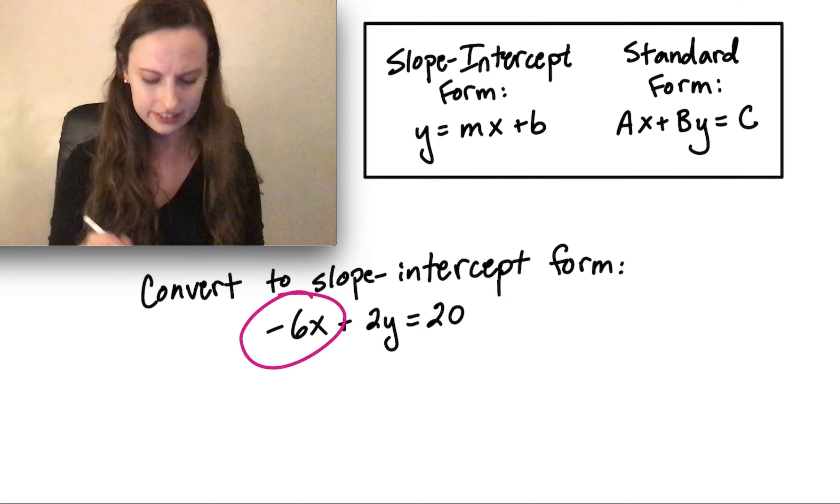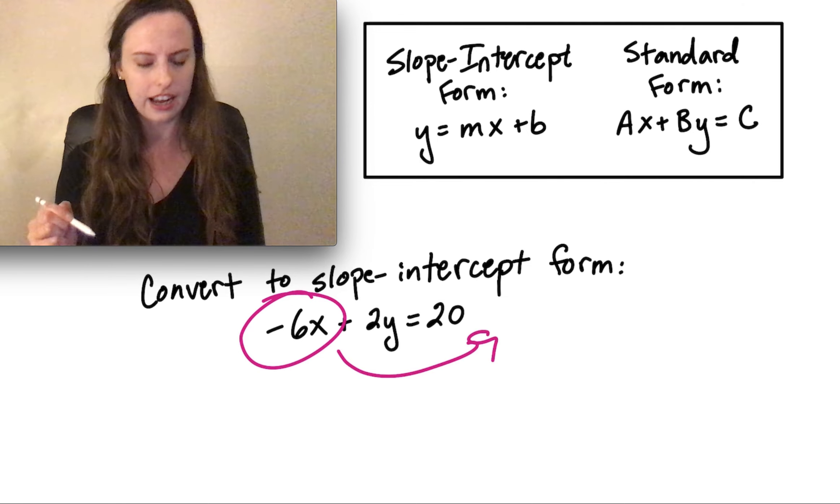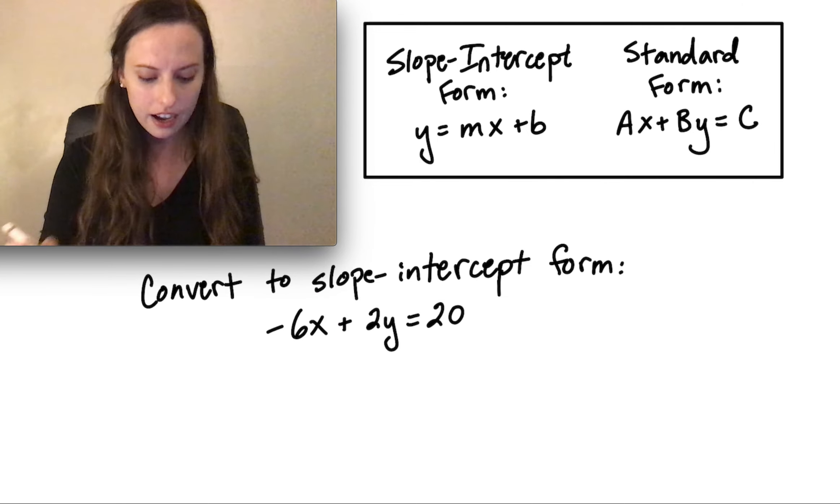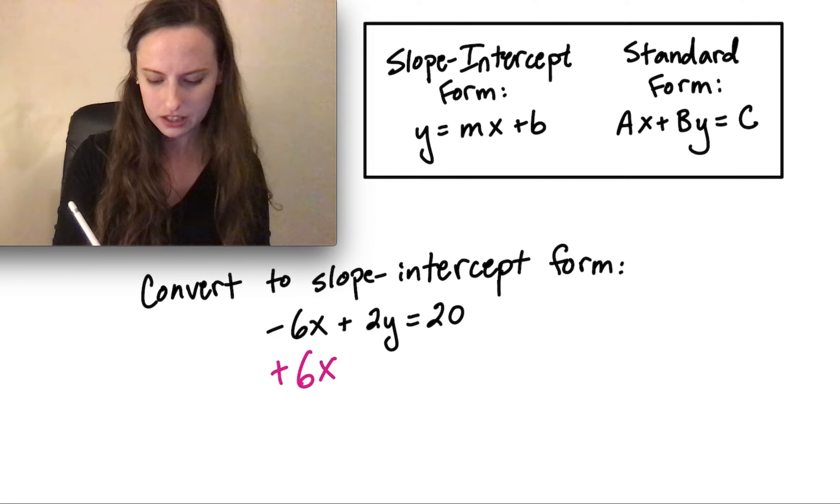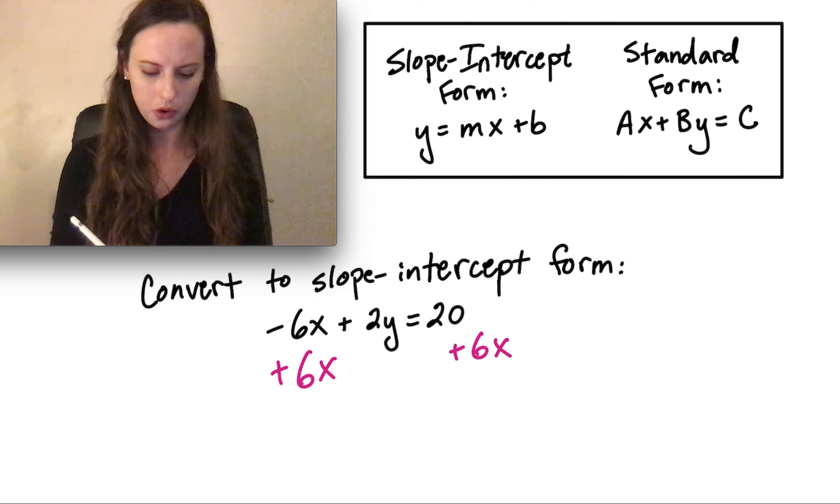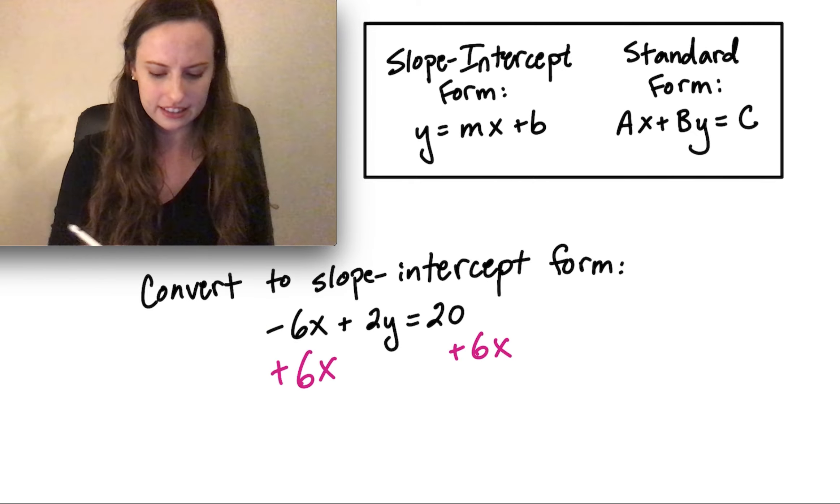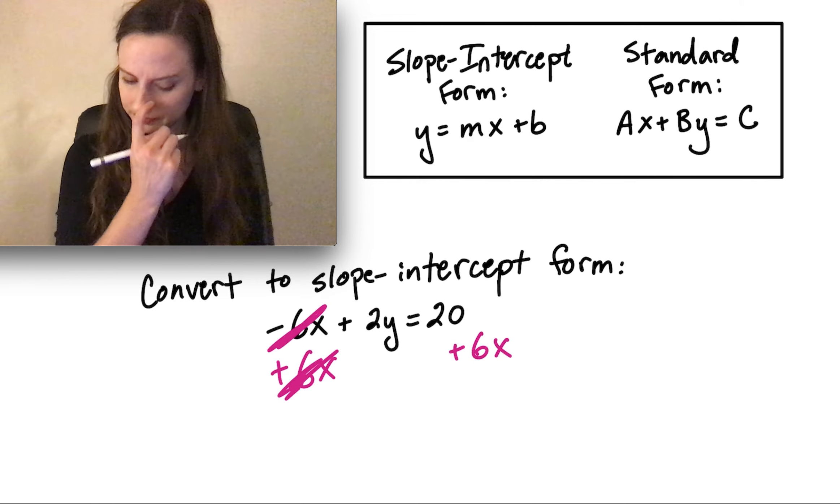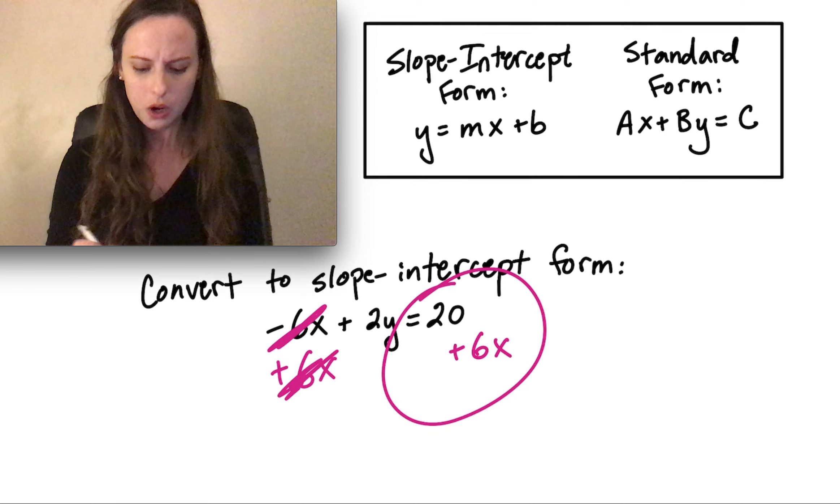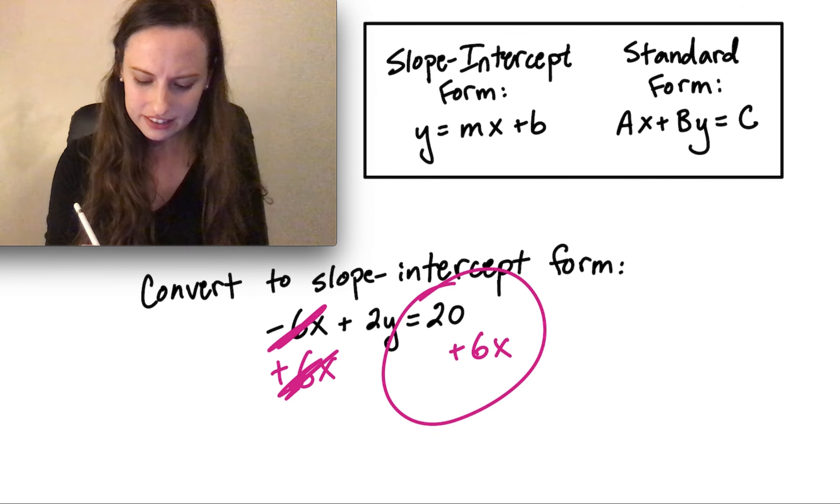We want the 6x to go to the other side of the equation. Because we have a negative 6x here, we need to cancel that out by adding 6x to both sides. On the left-hand side here, the negative 6x will cancel with the positive. And on the right-hand side, we have 20 plus 6x.